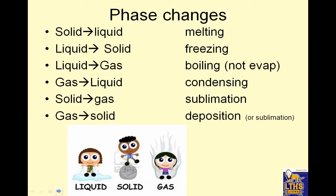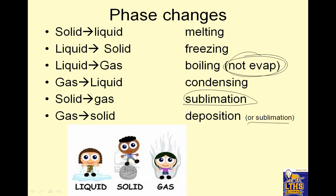Phase changes — you should know the names of these. Solid to liquid is melting. Liquid to solid is freezing. Liquid to gas is boiling, not evaporation — that's very important. Gas to liquid is condensing. Solid to gas is called sublimation — this word might be a little bit new. And gas to solid is deposition, also called sublimation in some places.